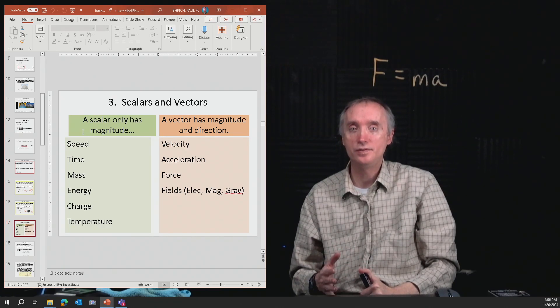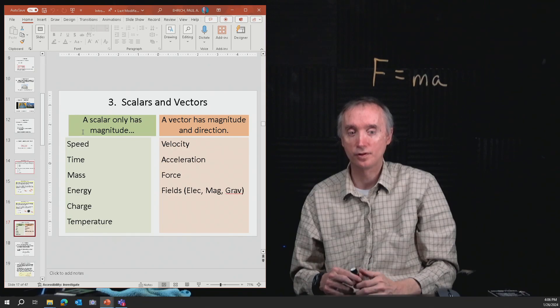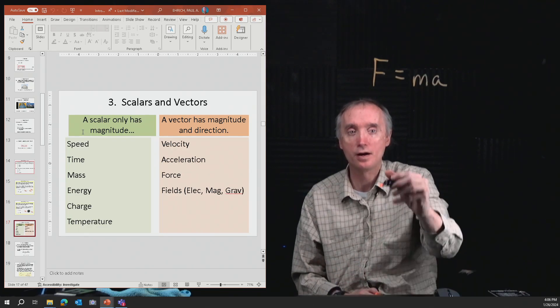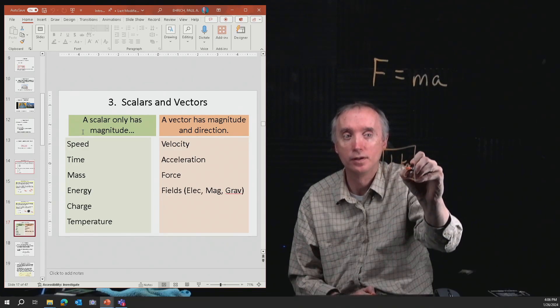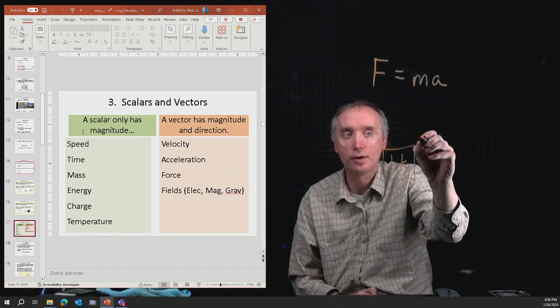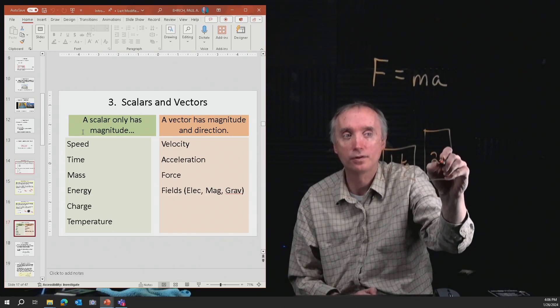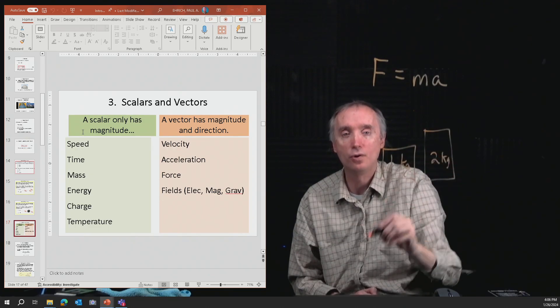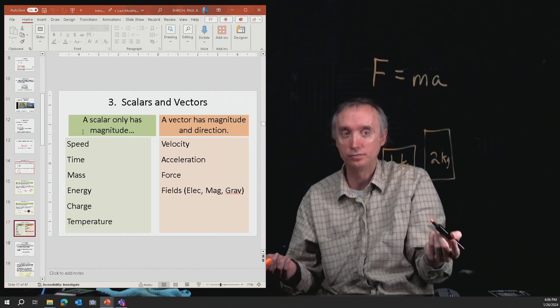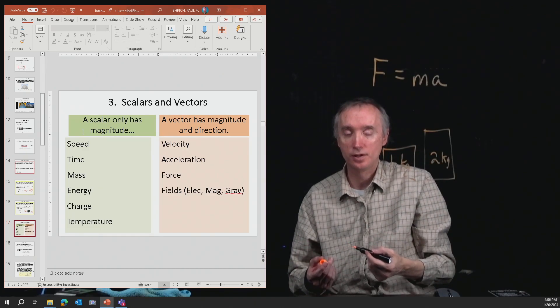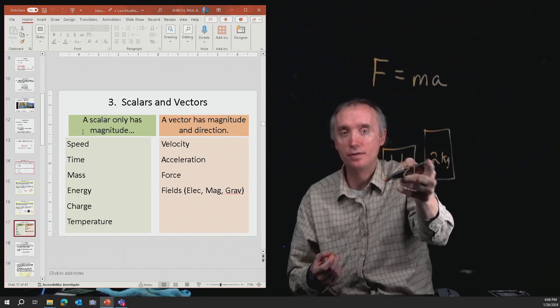Now, it's very easy to add scalars together. So, for example, if you've got a box with a mass of one kilogram and then you have another box that's bigger with two kilograms, and you want to know what's the total mass, well, one plus two, it's no big deal. So scalars, you can just add the numbers together.